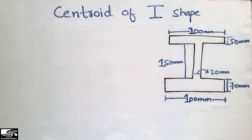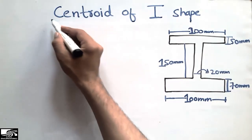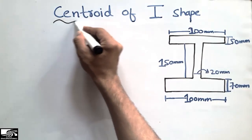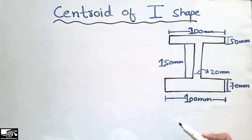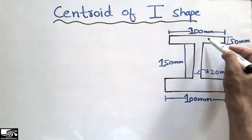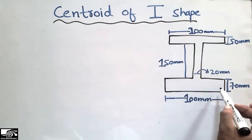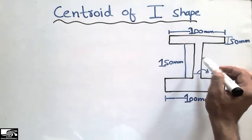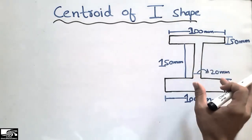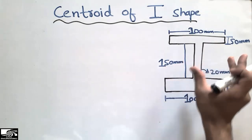Hello guys, welcome back to the Seven Engineering YouTube channel. Please subscribe to our channel for more videos. Today our topic is about the method of how we find the centroid of an I-shape. This is the I-shape given to us — two flanges, one on top and one at the bottom, and the middle one is the web of this I-shape.